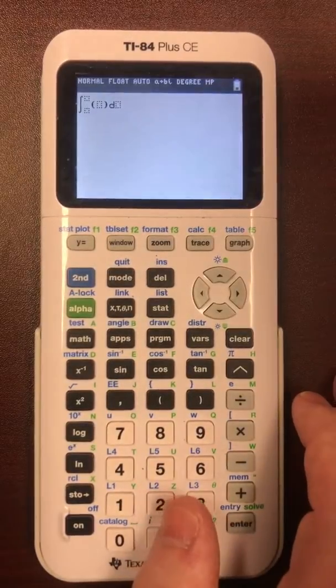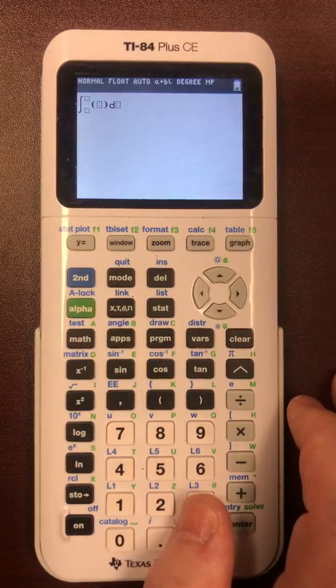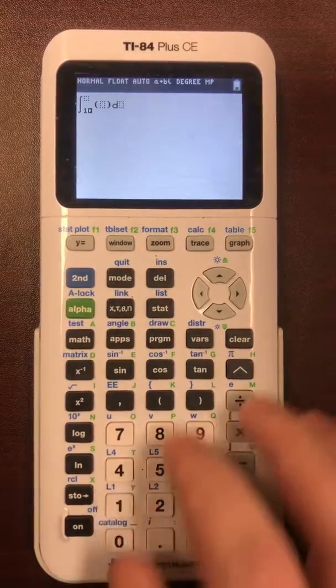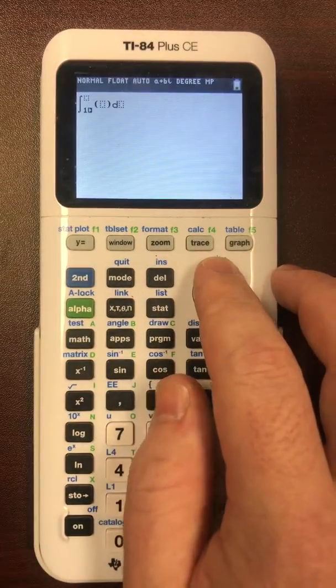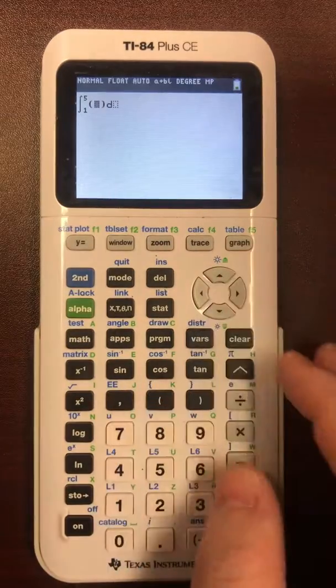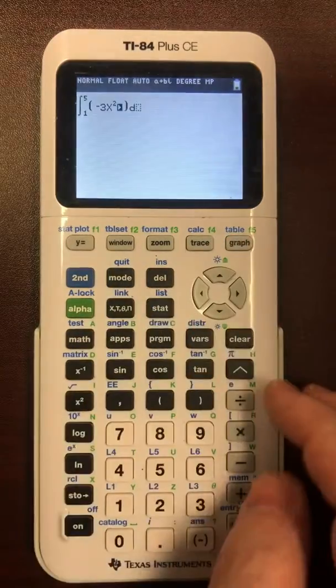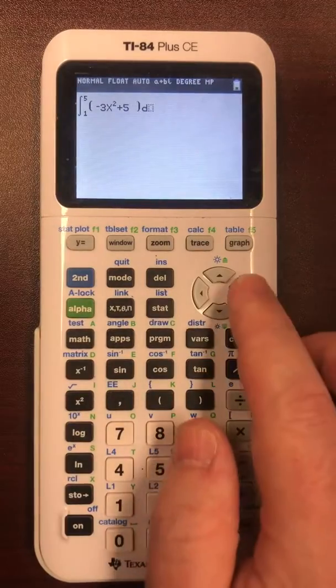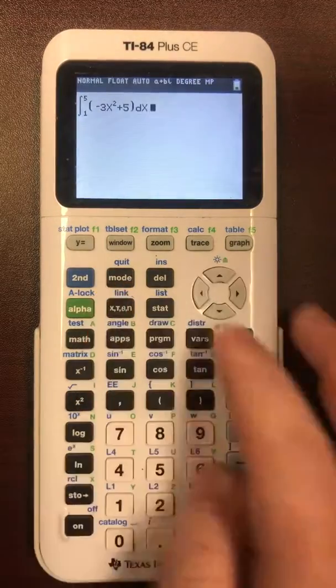So if you have, say that they ask you to take the integral from 1 to 5, starting value 1, ending value 5, of negative 3x squared plus 5 and do it in terms of x.